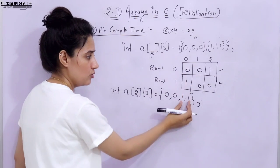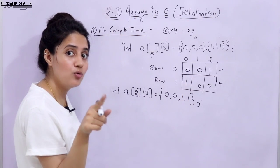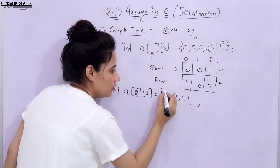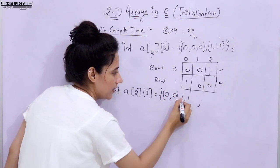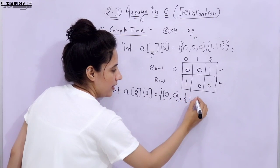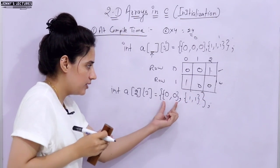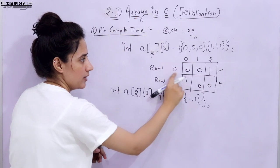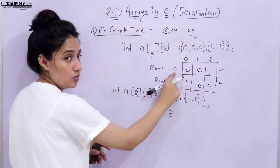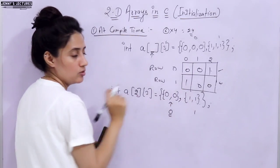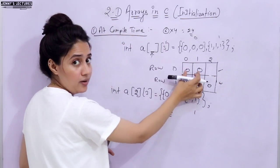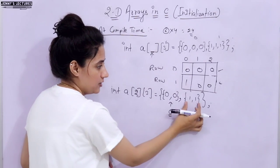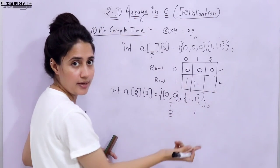If you want 0, 0 in the first row and 1, 1 in the second row specifically, you must explicitly specify rows using curly braces: { {0, 0}, {1, 1} }. Then whatever you write within each set of curly braces is treated as that row. The missing positions in each row are filled with 0 by default.